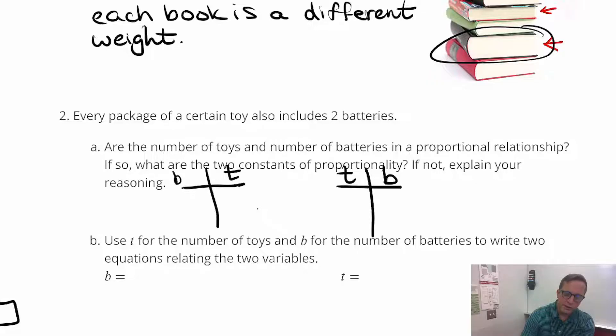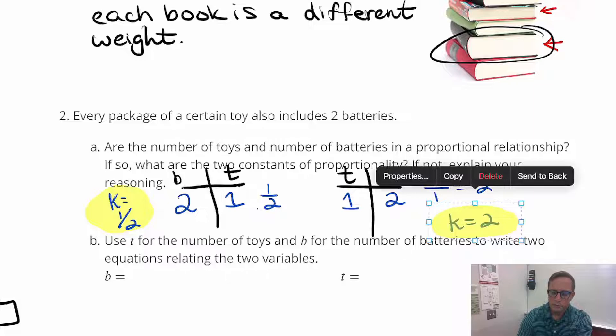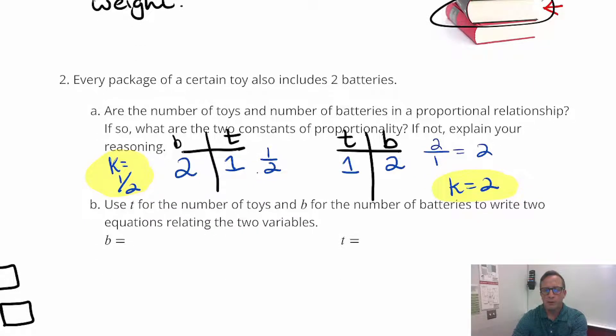And so it says every package of a certain toy also includes two batteries. So right here, two batteries for every one toy, right? So that's got a constant of proportionality of one divided by two. So the K is going to be equal to one half on that one. So that'll be one half. And on this one right here, just make it the other way around. This is going to be one, one toy. For every one toy, there are two batteries. And so that's going to have a constant of proportionality of two divided by one, which is two. So your K equals two. So there are your two constants of proportionality. And notice, too, how they're reciprocal of each other? They're reciprocals of each other. And that's how it's going to work when you kind of switch around the input-outputs or the X and Y. In this case, it was a B and a T.